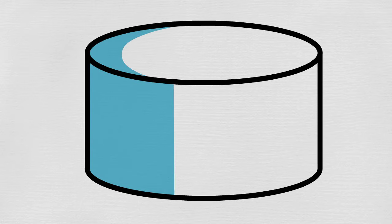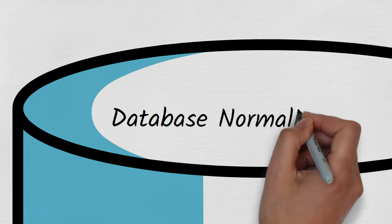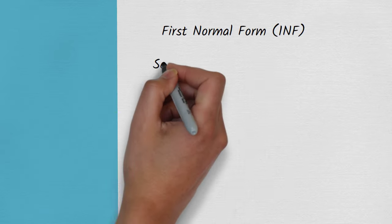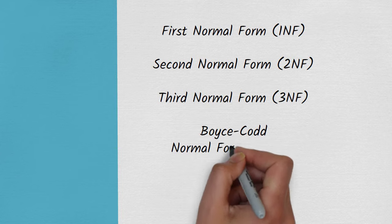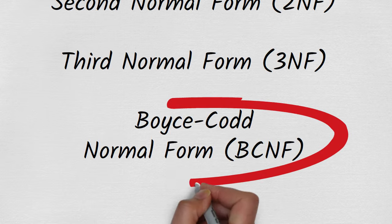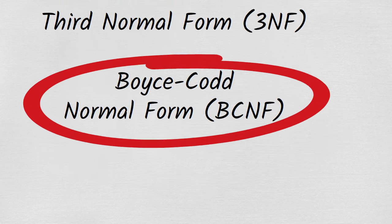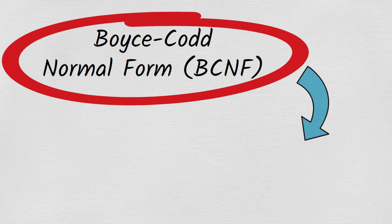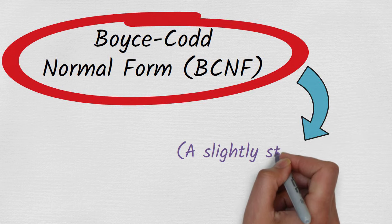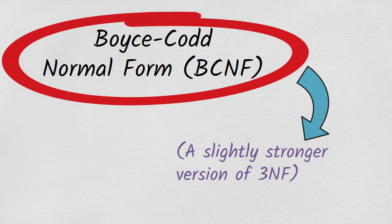If you've watched Decomplexify's normalization video, you may remember that there was one normal form we didn't say very much about. This was Boyce-Codd normal form, also known as BCNF. Boyce-Codd normal form is best understood as a slightly stronger version of third normal form. In practice, we rarely see third normal form tables that violate Boyce-Codd normal form, but it can happen.